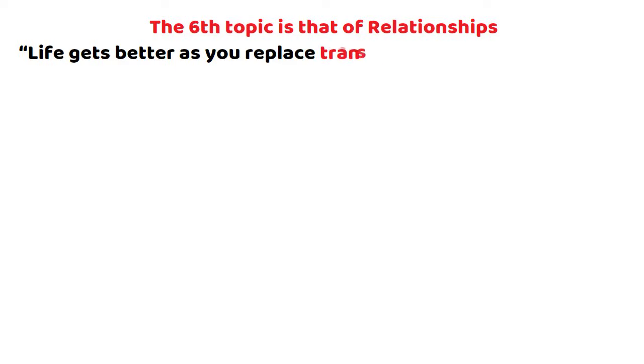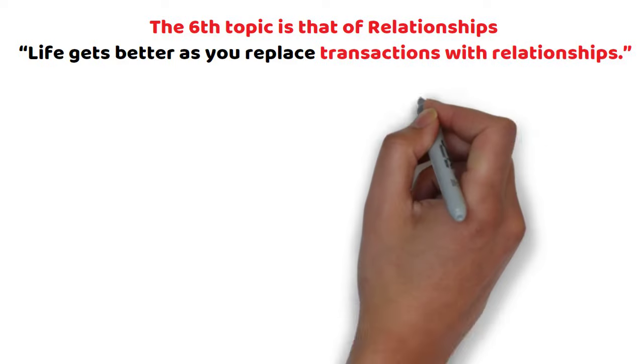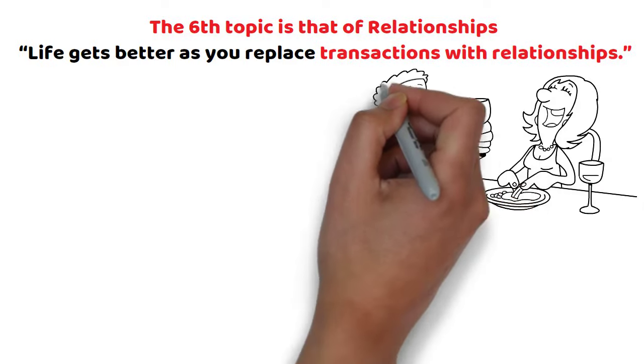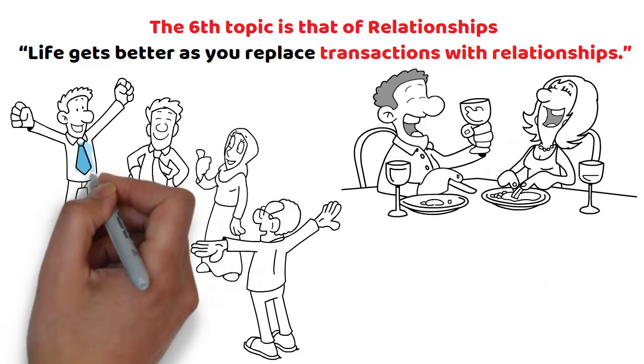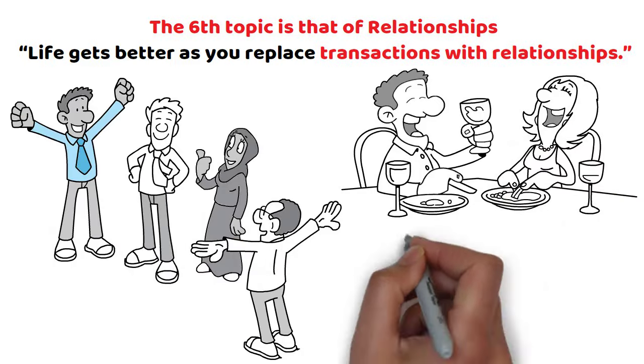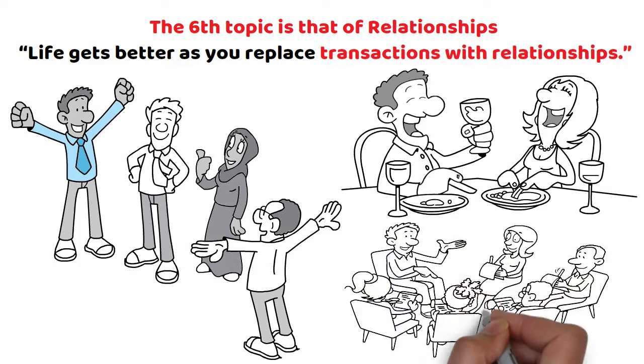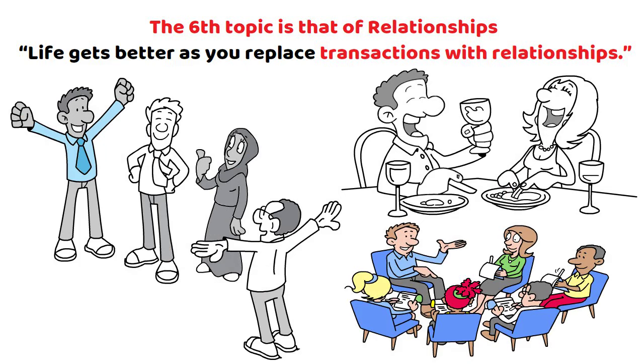The sixth topic is that of relationships. Life gets better as you replace transactions with relationships. This quote encourages individuals to prioritize the cultivation of meaningful relationships as a pathway to a more fulfilling and enriched life. It suggests that the quality of our interactions with others plays a central role in shaping our overall well-being and happiness.